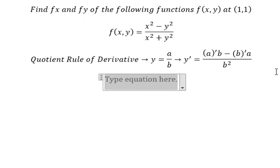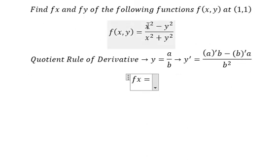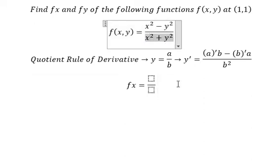For f_x, that means x is the variable and y is just like a constant number. So if we do the first derivative, we put this denominator to the power of two, just b squared here.